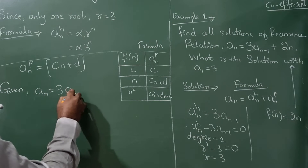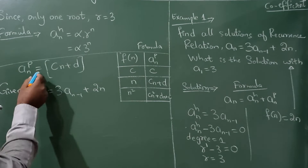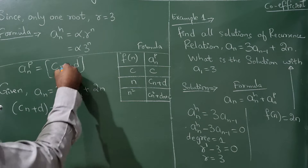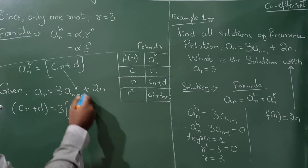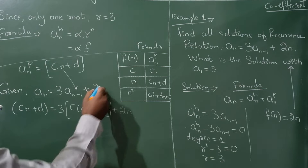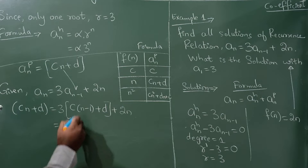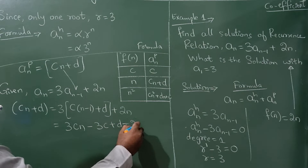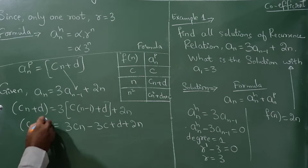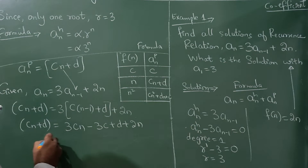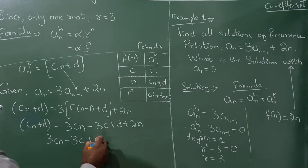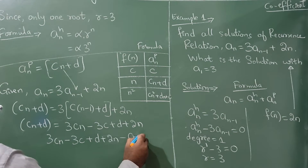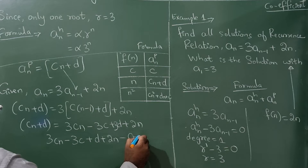Consider the given recurrence: aₙ = 3aₙ₋₁ + 2n. Substitute aₙ = cn + d and aₙ₋₁ = c(n−1) + d. Multiplying out: 3·c(n−1) + 3d + 2n = 3cn − 3c + 3d + 2n. Writing cn + d on the left, we take all terms to the right hand side.